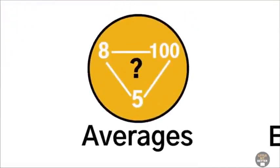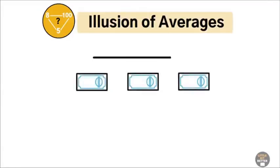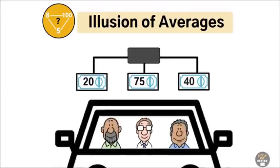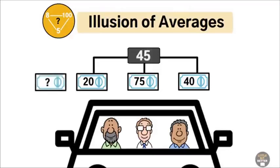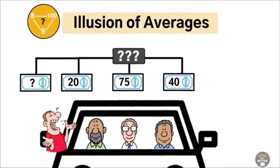Illusion of averages. The illusion of averages is the mistaken belief that average numbers always reveal the full story. For example, you're in a car with two of your best friends. Suddenly, your friend's friend joins you as well, and he turns out to be Elon Musk. Now, can you tell me what the average wealth in that car is? You see, it's nonsense to talk about averages in this case.